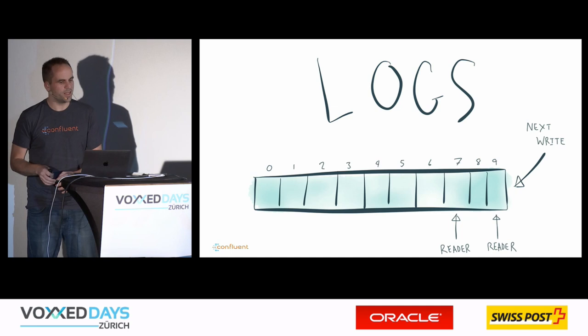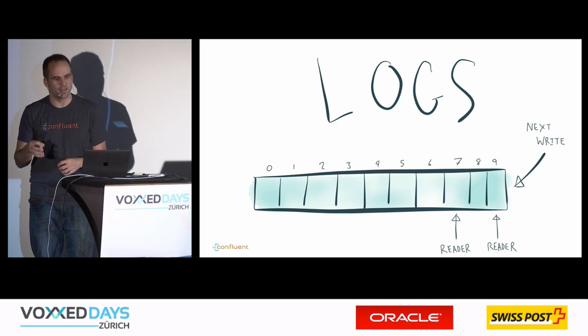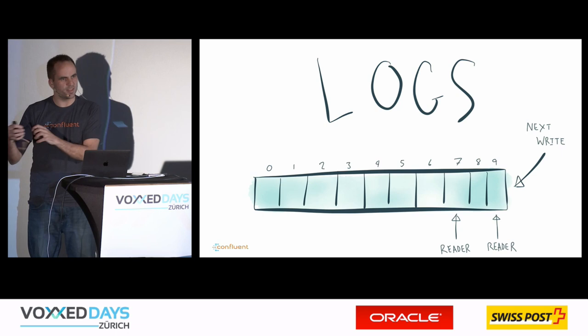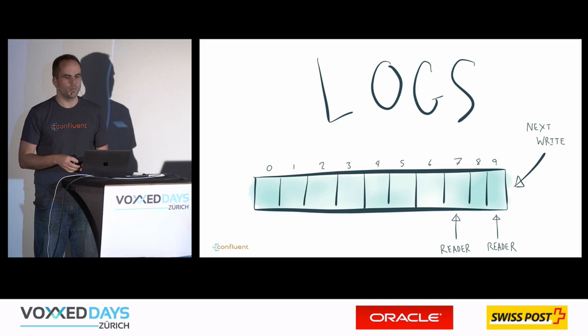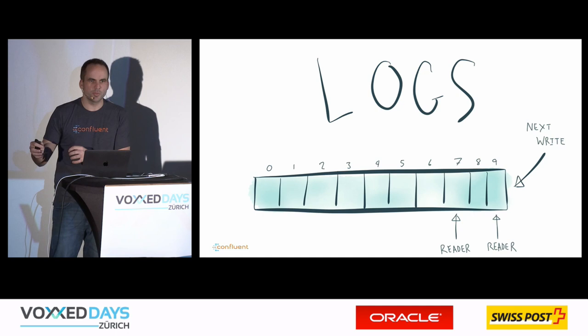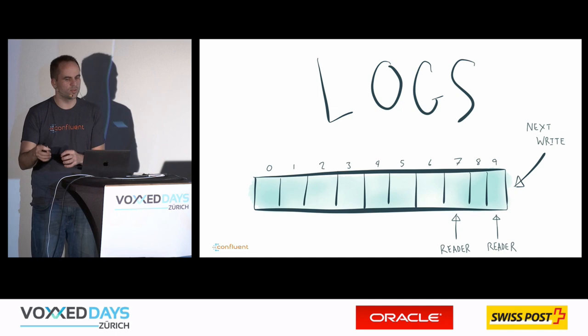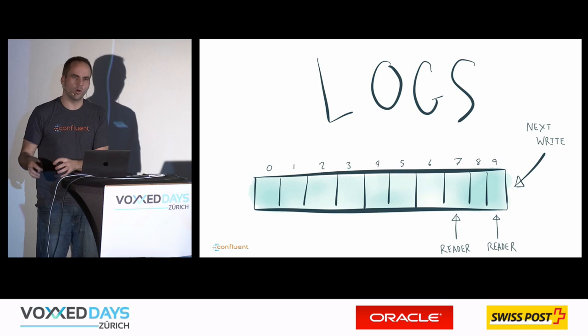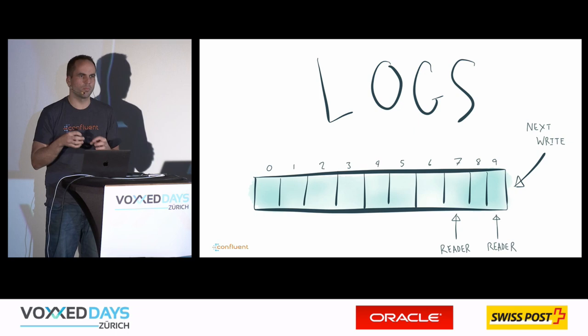Producers produce messages into the log, and consumers can consume in their own pace. One consumer might be a batch system consuming overnight, another is a millisecond fraud detection system, another is a REST request-response system. Different consumers can consume all the data they want at the pace they want and as often as they want. That's a key difference to traditional queuing — especially important for microservice architectures.